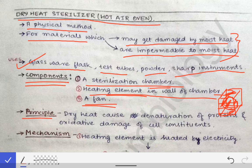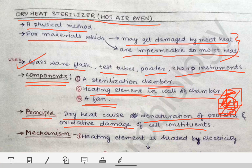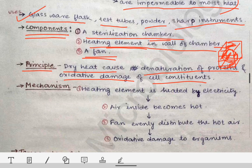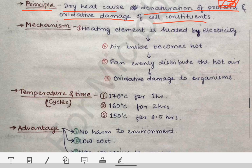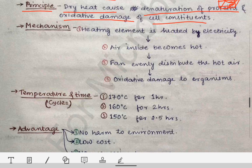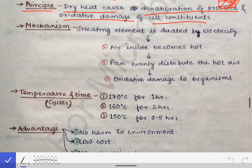The principle of this method is dry heat. Dry heat causes denaturation of proteins and oxidative damage to cell constituents, and by this mechanism it destroys the organisms. This is the principle of the hot air sterilizer.